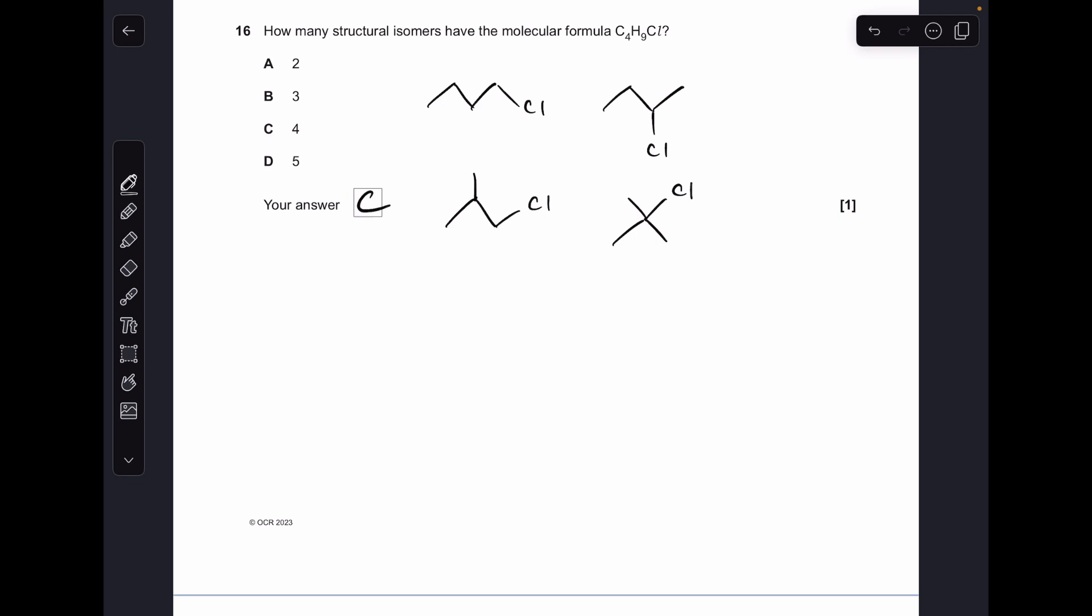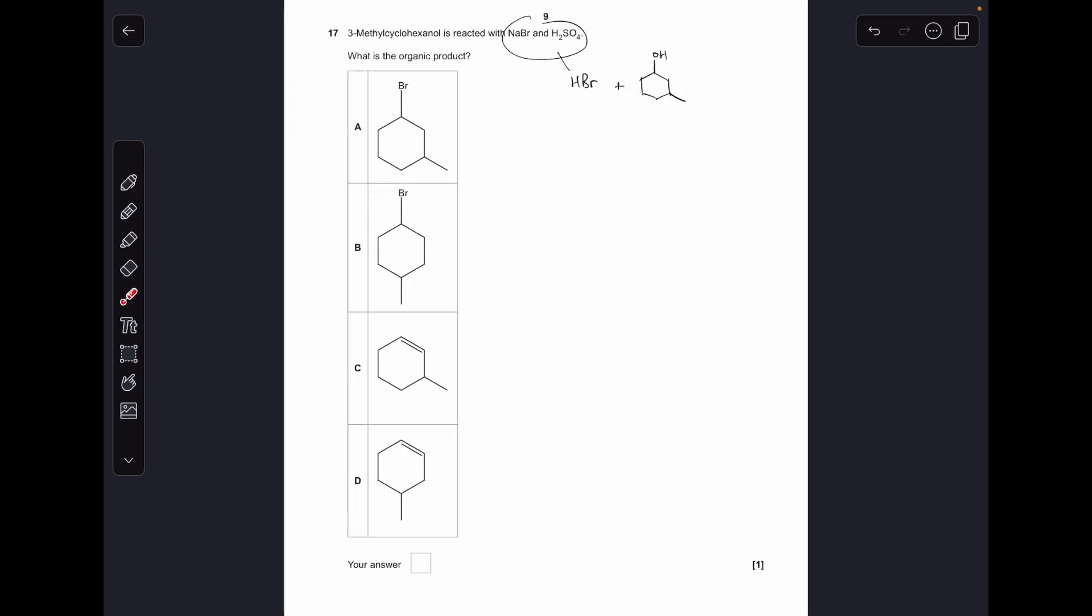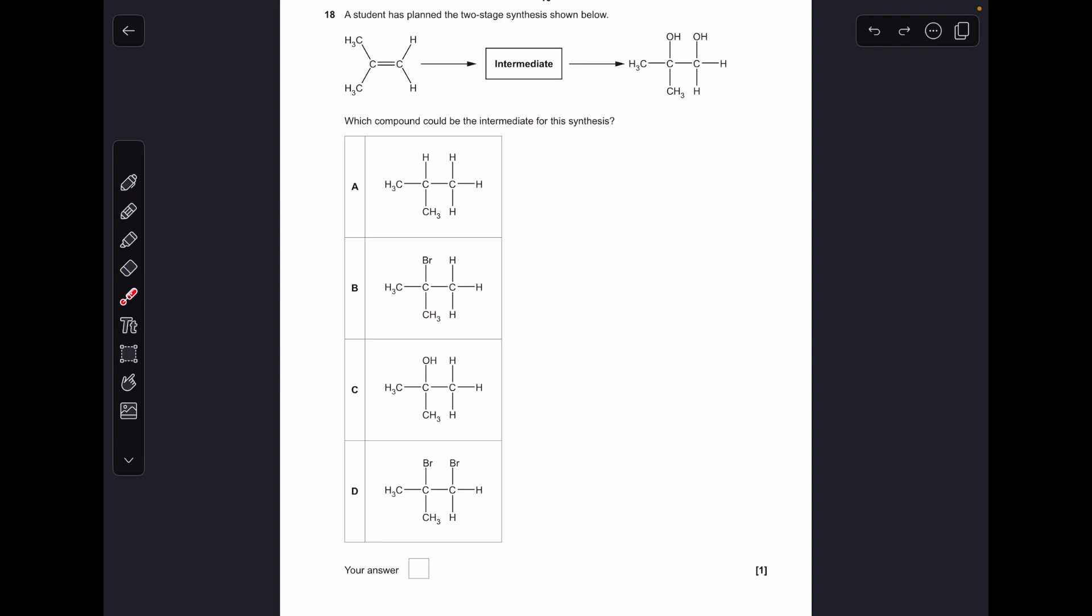Number seventeen. Sodium bromide and sulfuric acid are reacted together to generate HBr for the reaction. There's the 3-methyl cyclohexanol, so the OH will substitute for the Br and we'll get option A as our answer.